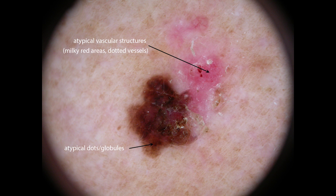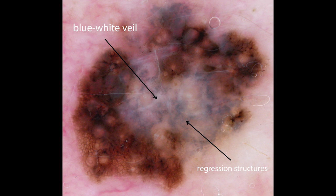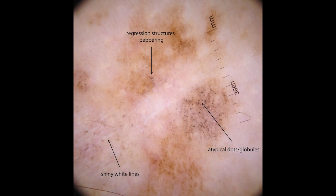This dermoscopic image of a melanoma shows atypical vascular structures such as milky red areas, dotted vessels, and on the periphery, there are some atypical dots and globules. In this melanoma, there are regression structures with a blue-white veil. This melanoma on sun-damaged skin shows regression structures with peppering, and atypical dots and globules, along with some shiny white lines.